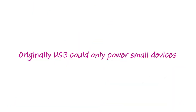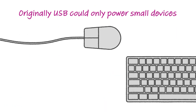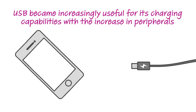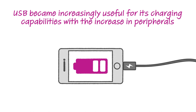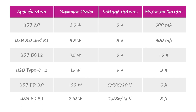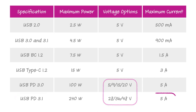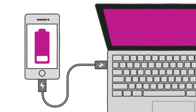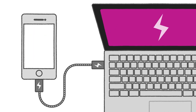Let's talk about the last aspect of USB, which is power delivery. Originally, USB only provided enough power to run small electronic devices such as mice or keyboards. But as smartphones and other electronics became more prevalent and power hungry, designers have been using USB more and more for its charging capabilities. An effort has been made to standardize this into what is now called the USB power delivery, or USB PD, standard. With a Type C connector, USB PD can provide variable voltage — for power delivery 3.1, this includes voltage levels between 5 and 48 volts.